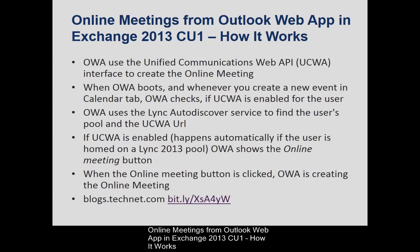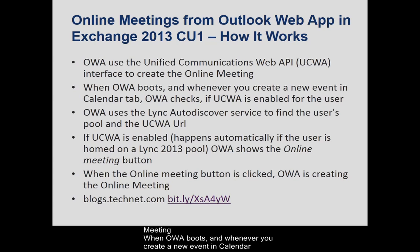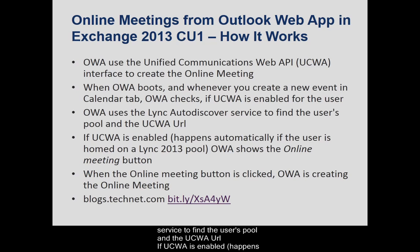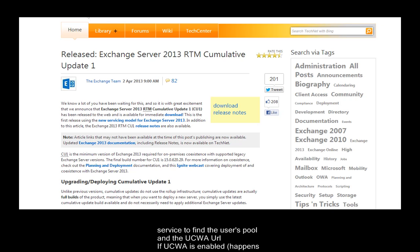Online meetings from Outlook Web App in Exchange 2013 CU1 — How it works. OWA uses the Unified Communications Web API, or UCWA, interface to create the online meeting. When OWA boots and whenever you create a new event in the Calendar tab, OWA checks if UCWA is enabled for the user. OWA uses the Lync auto-discover service to find the user's pool and the UCWA URL.